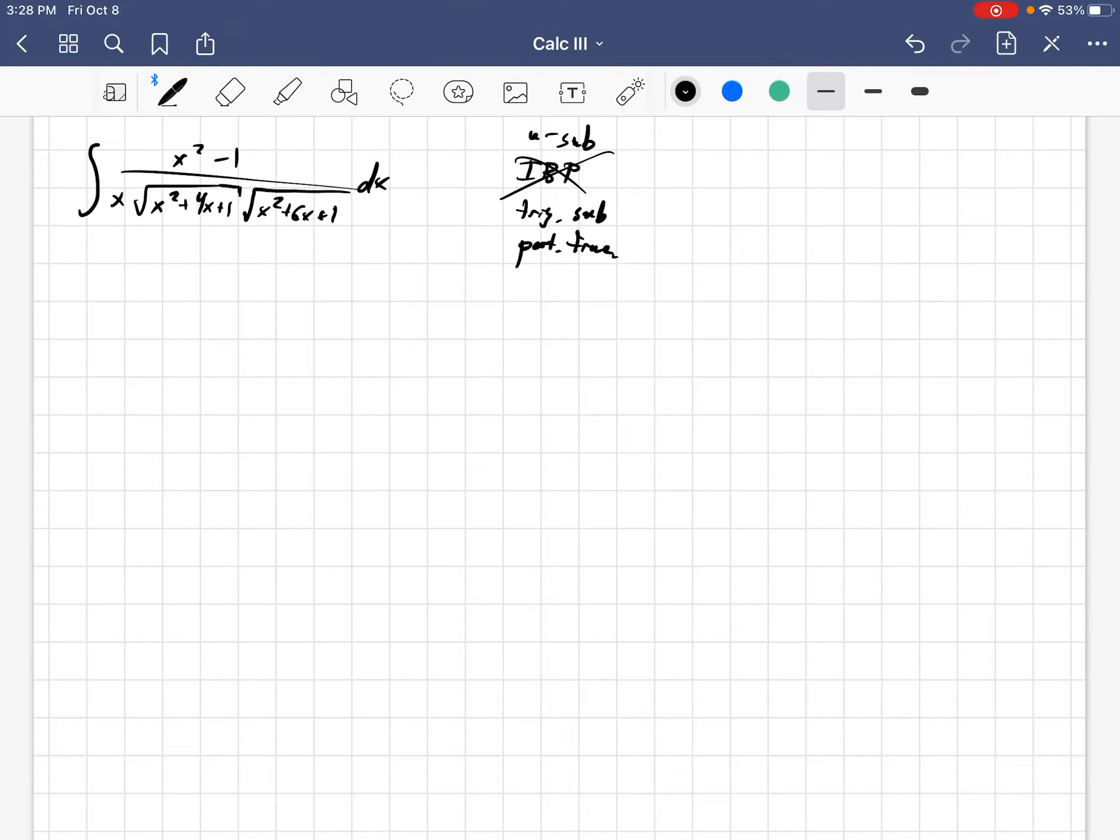Trig sub, you might think, okay, maybe I should complete the square under these radicals, but when you complete the square, you're going to get, in this case, x plus 2 squared minus 3. And then in the other case, you're going to get x plus 3 squared minus 8. And so you'd have to be subbing in two different things. So trig sub would not work, because we're going to have an x plus 2 and an x plus 3. Partial fractions? Definitely not.